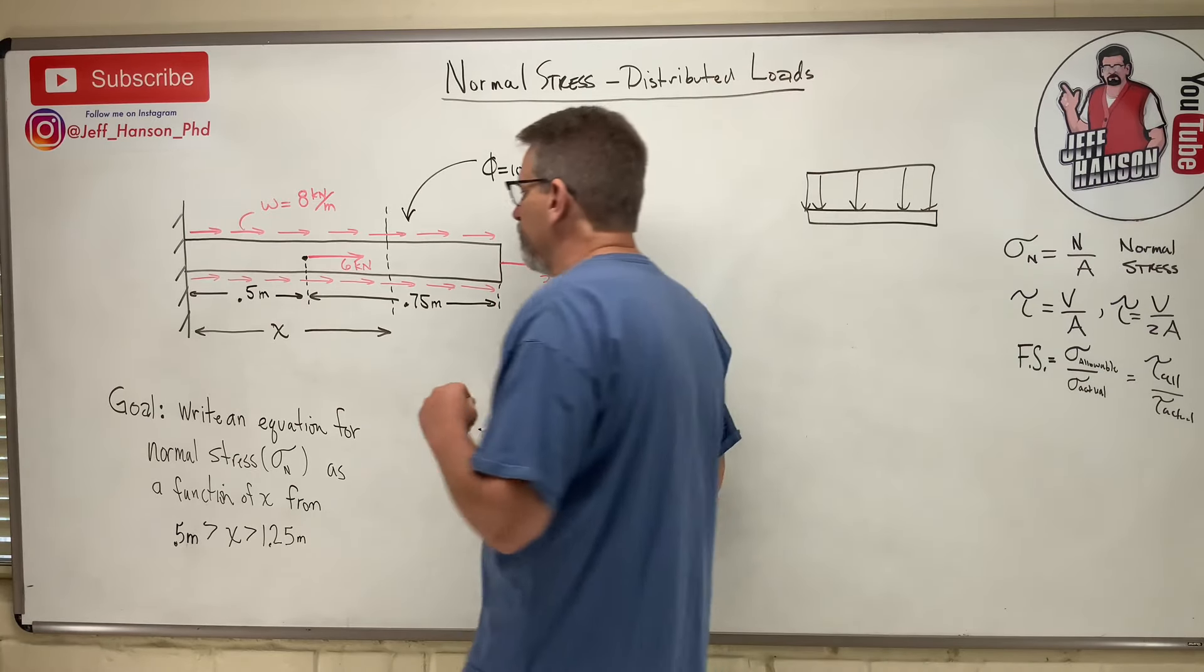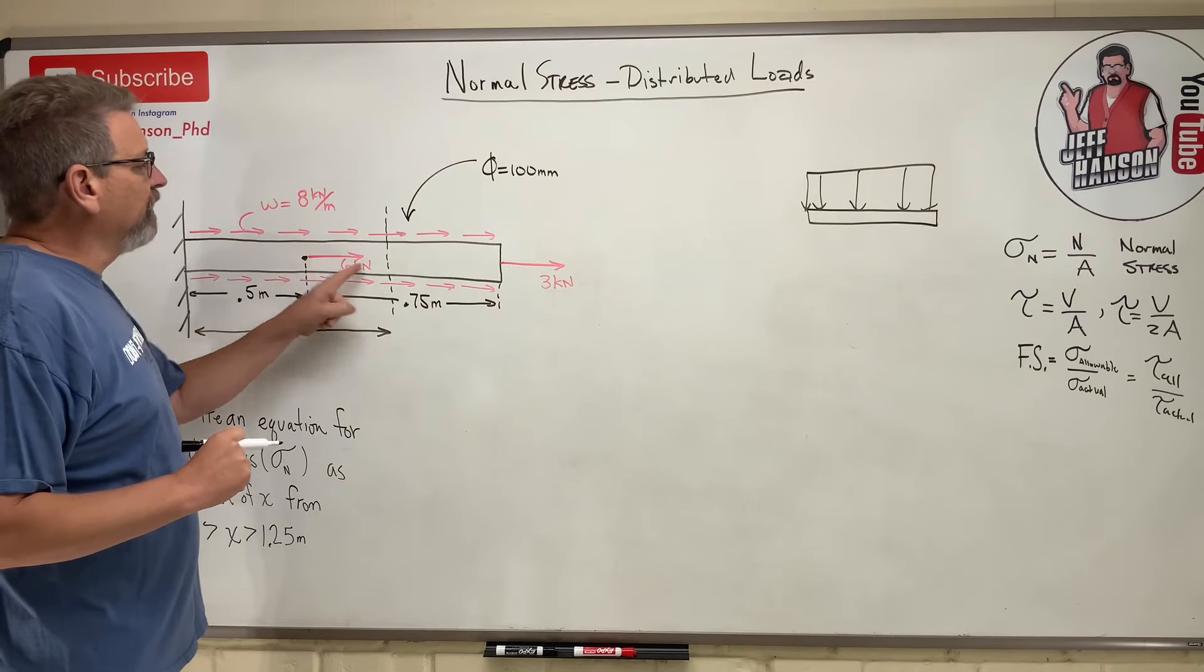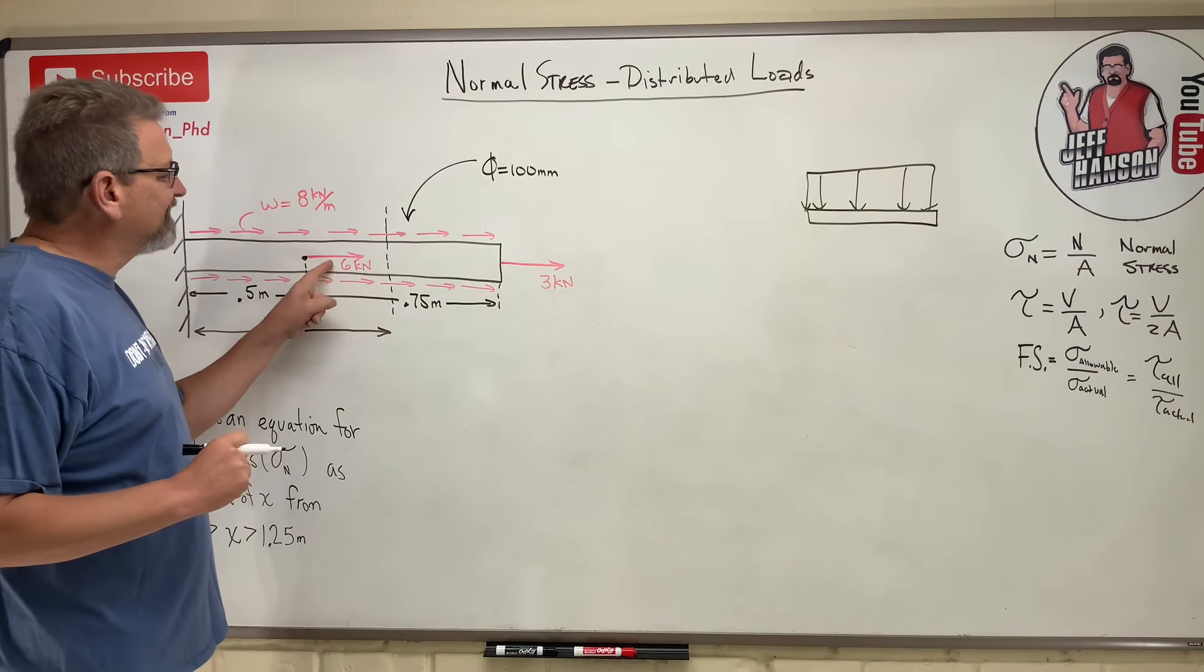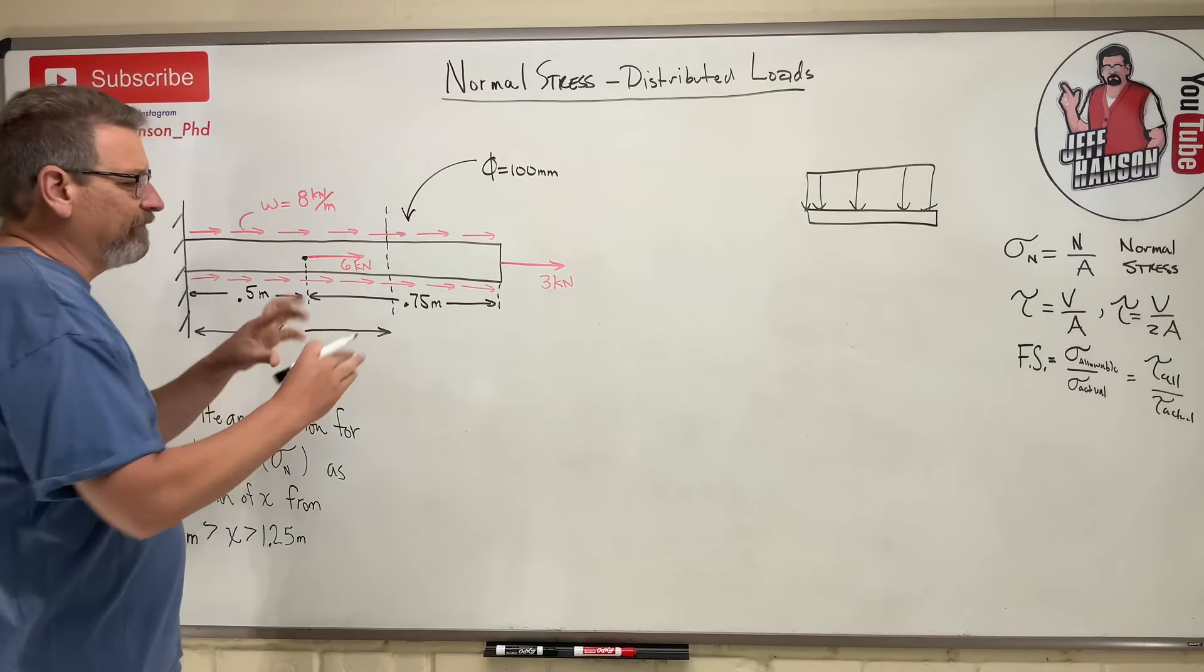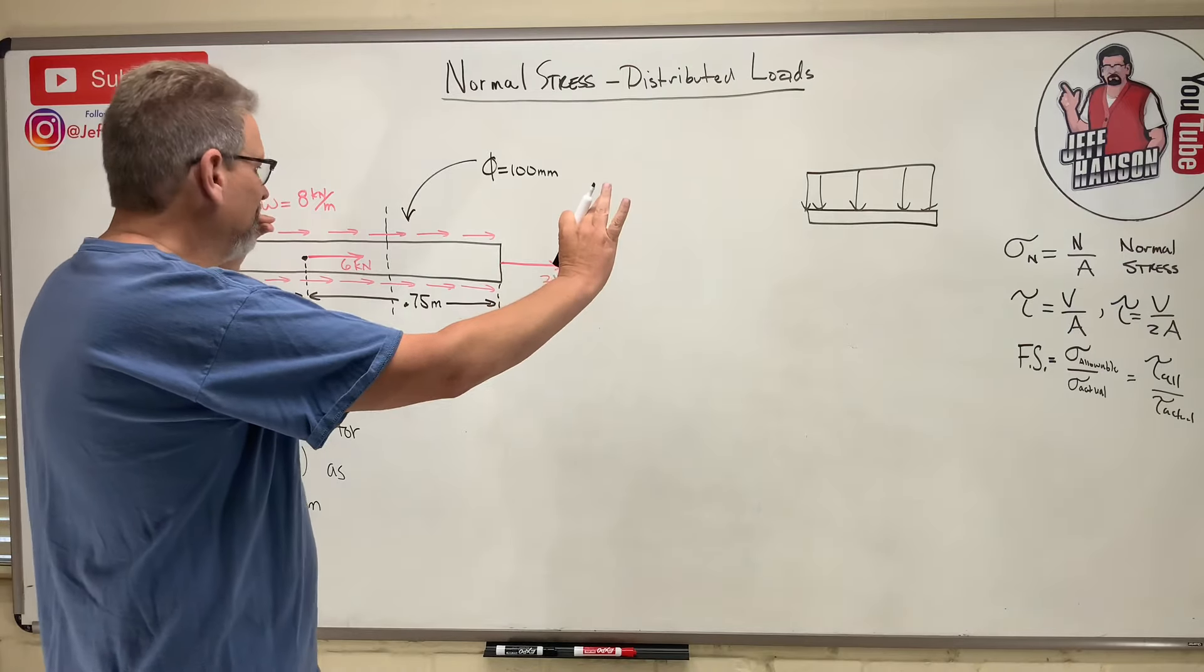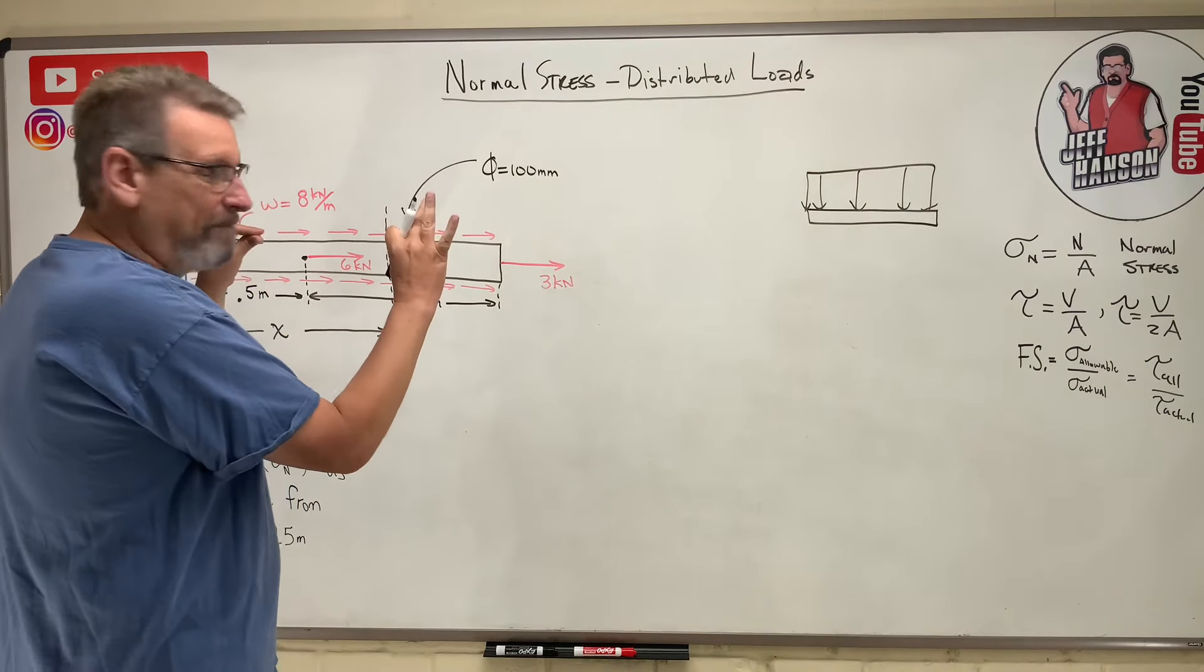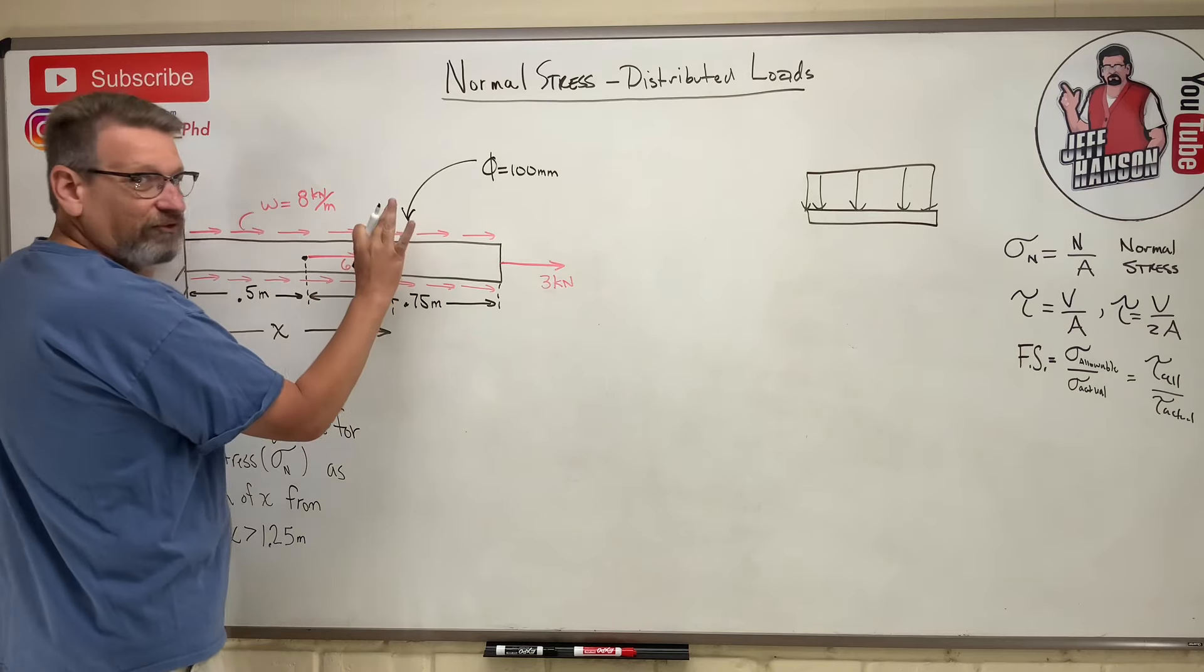Now here's a question for you. If you're out here somewhere, what is the six kilonewtons acting on? Imagine this beam is a big rubber band. If I grab that rubber band right in the middle, right here at six, and I stretch it with six kilonewtons,